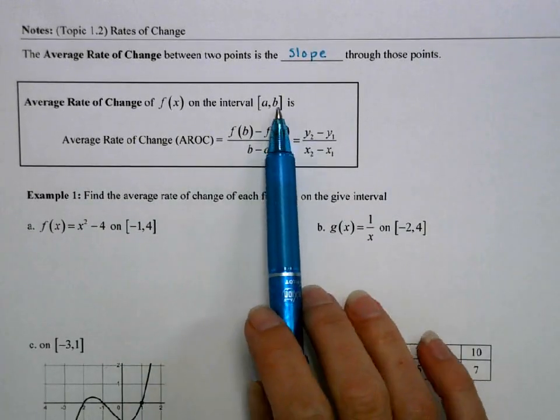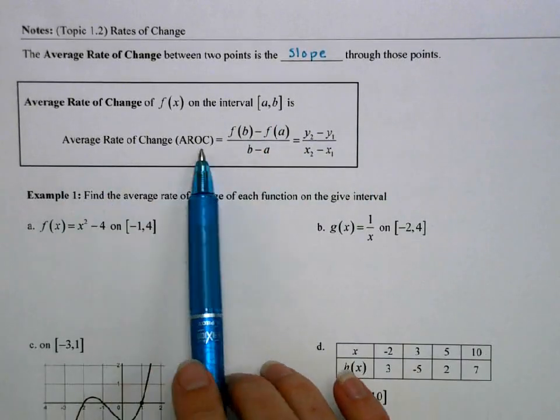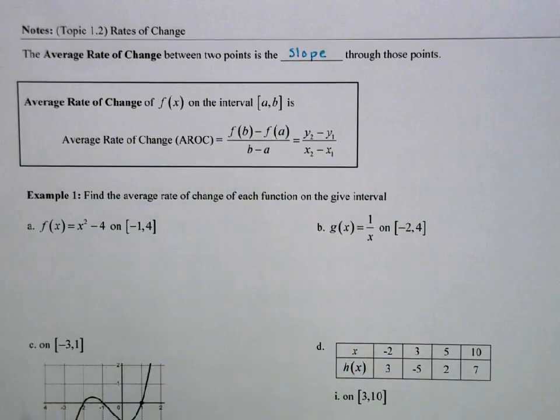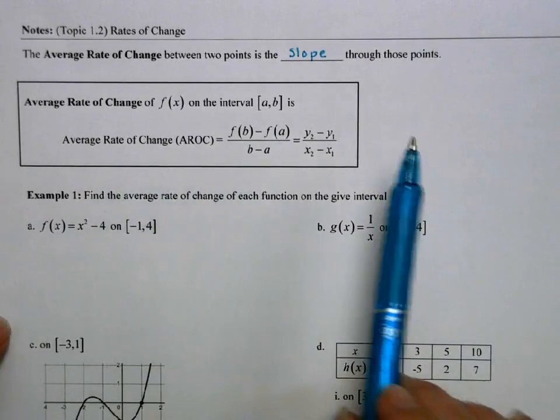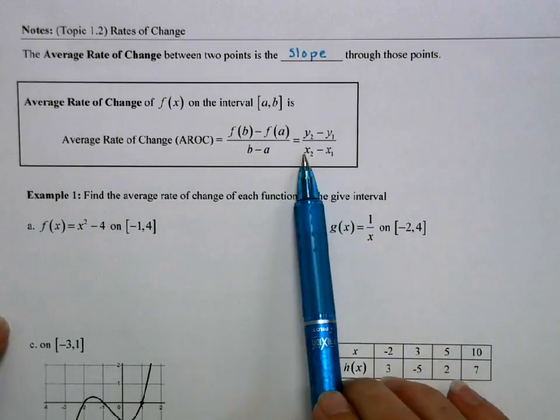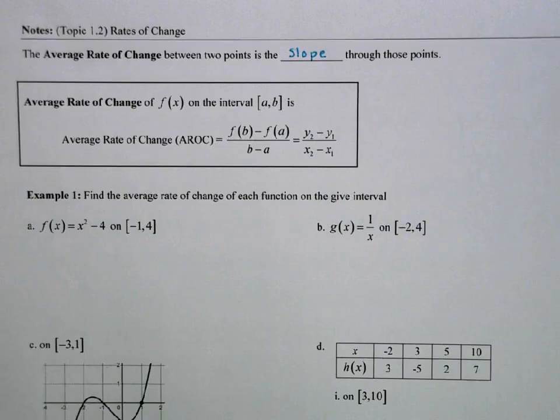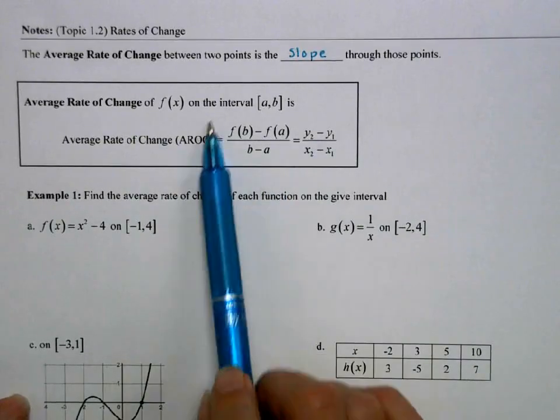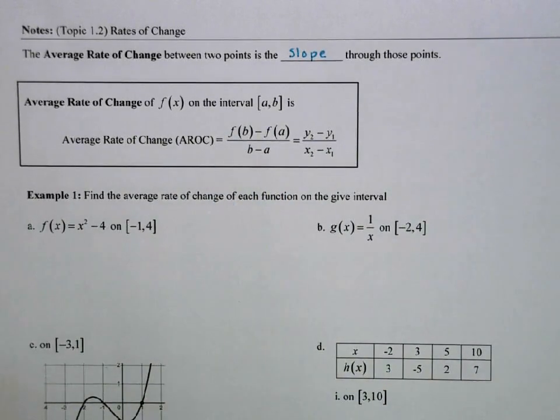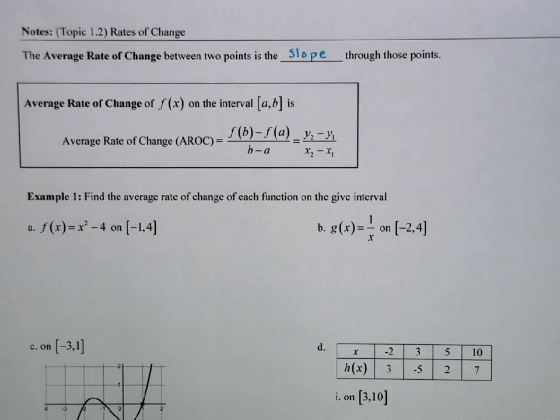So if we're talking about the interval AB, the average rate of change, which you'll see me just say AROC, is slope: y2 minus y1 over x2 minus x1, rise over run. A little bit more formally, it's f of b minus f of a over b minus a. It's the difference in the y values over the difference in the x values. So we can find this in a number of different ways.